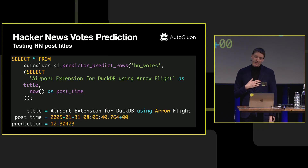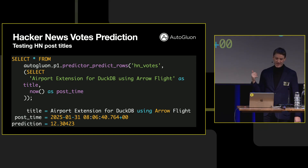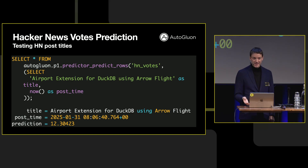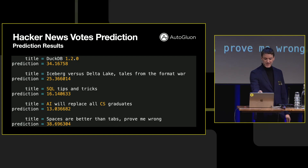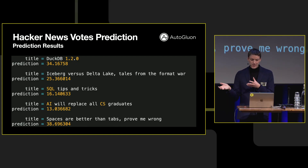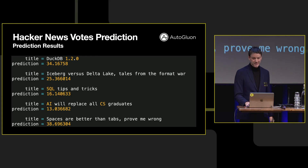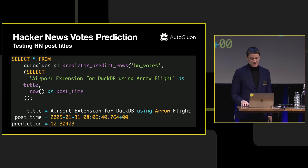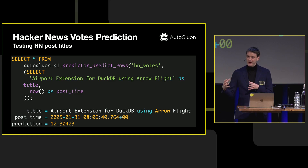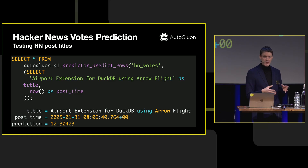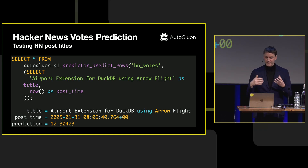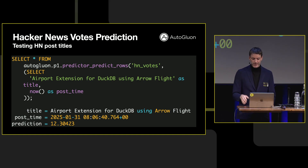I have some bad news for myself though: what happens if I put the airport extension on Hacker News? The predicted score is only 12. Gabor's headline of 'DuckDB 1.2.0' scores 34 — clearly Hacker News cares a lot more about that than this extension. But that's just kind of where airport can go, and all of that means you're writing no C++ code — it's just Python code.